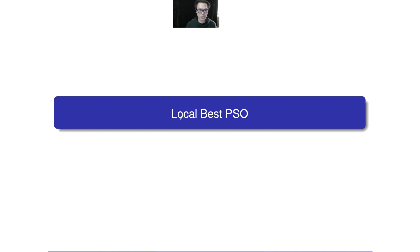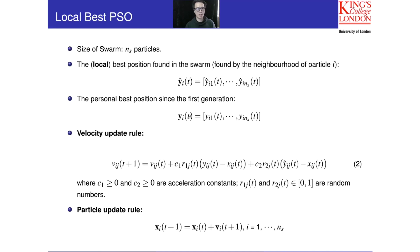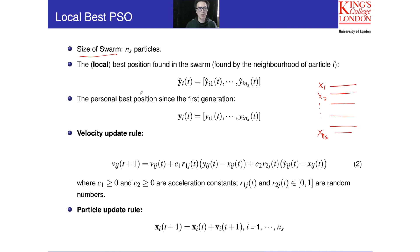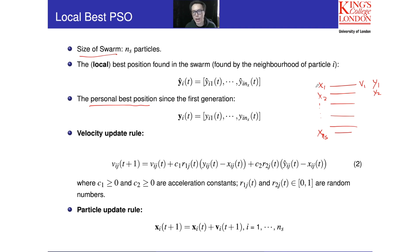I'm going to talk about another version of the PSO — we call this the Local Best PSO. The setting is more or less the same: we need to create a population of size ns, so we have individuals x1, x2, up to x_ns. Associated with each particle we have the velocity and the personal best position y1, y2, and so on, which represents the best solution each particle has found since the first generation.